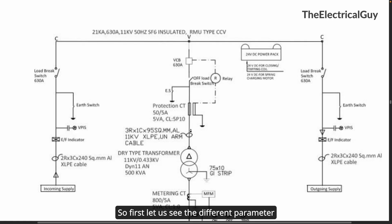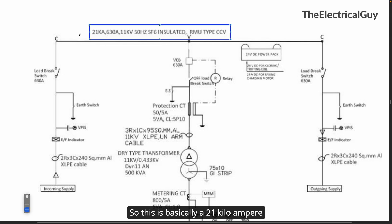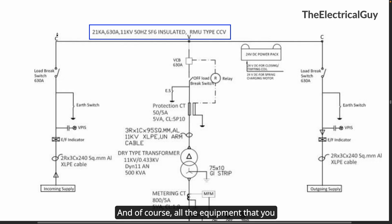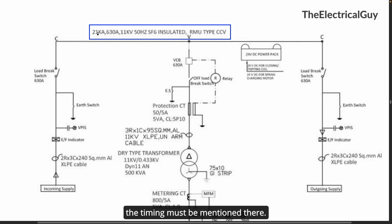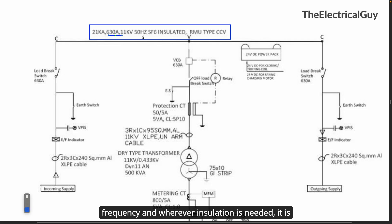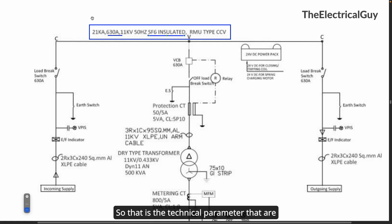Let us first see the different parameters mentioned on the single line diagram. This is basically a 21 kilo ampere system, which is the short circuit rating. All the equipment used within this package substation must be suitable for 21 kilo ampere. They have not mentioned whether it is for one second or three seconds, but the timing must be mentioned there. The rated current is 630 ampere, 11 kV is the rated voltage, 50 hertz is the frequency, and wherever insulation is needed it is achieved with the help of SF6 gas.